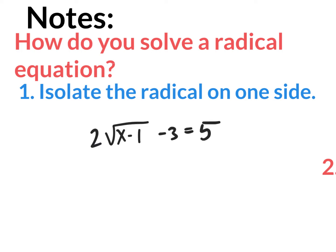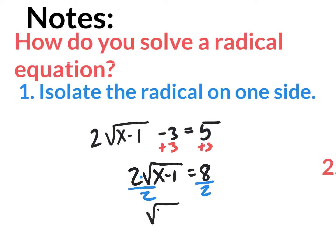For example, let's say we had a radical equation. Step 1 is to isolate the radical, which is on the left side. We need to get it by itself. So we'd go plus 3 and plus 3, giving us 2 times the square root of (x minus 1) equals 8. Then to get rid of the multiplication of 2, we divide by 2, giving us the square root of (x minus 1) equaling 4.